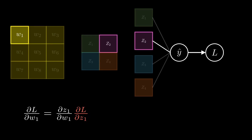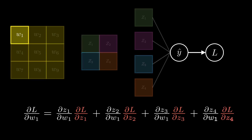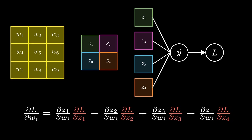We'll follow the same logic for z2. First, we take the partial derivative of z2 with respect to w1 to measure the rate of change in z2 when w1 changes. Then, we take the partial derivative of y-hat with respect to z2 to measure the rate of change in y-hat once z2 changes. Finally, we take the partial derivative of the loss with respect to y-hat to measure the rate of change in the loss when y-hat changes, and then simplify the last term as we did earlier. If we do the same thing for z3 and z4, we'll end up with the equation for the partial derivative of the loss with respect to w1. The same logic can be applied to all of the weights, giving us this general formula.